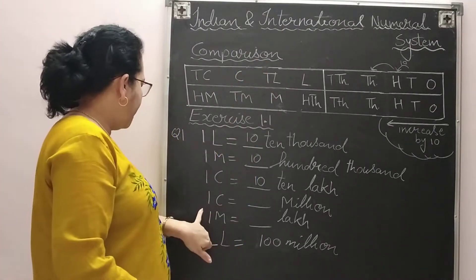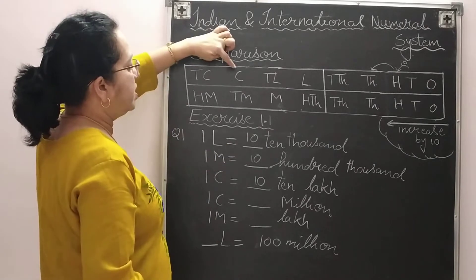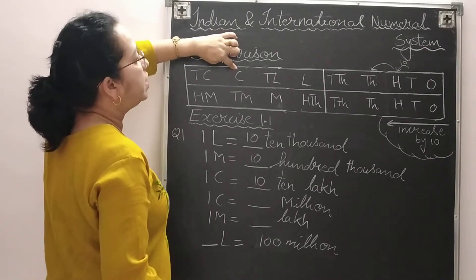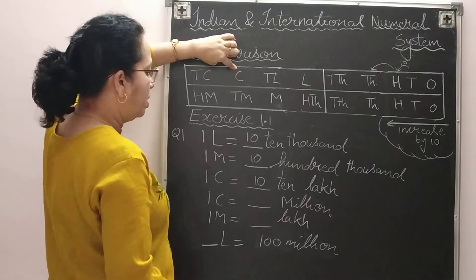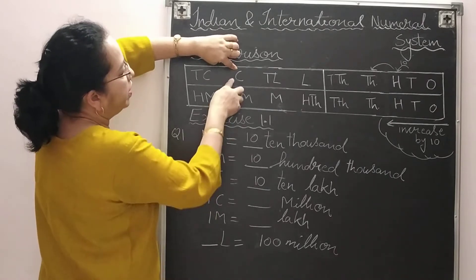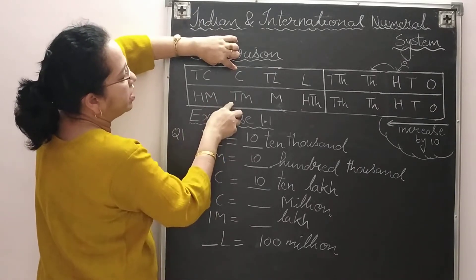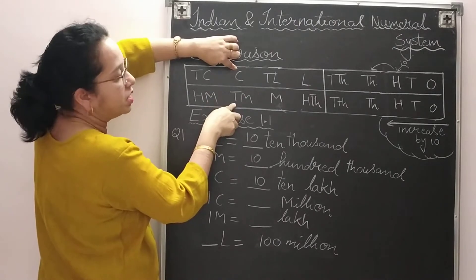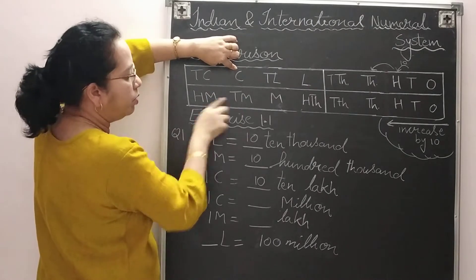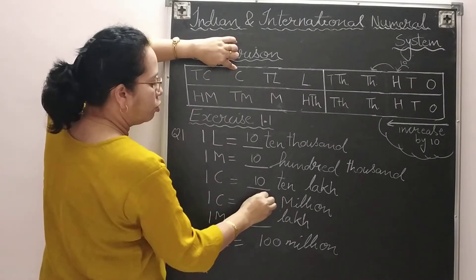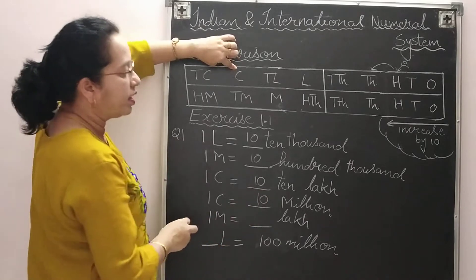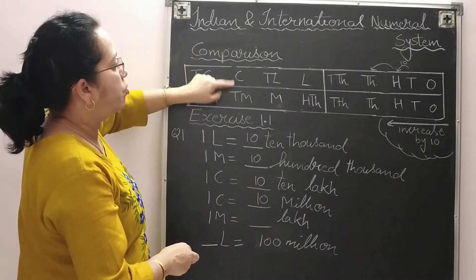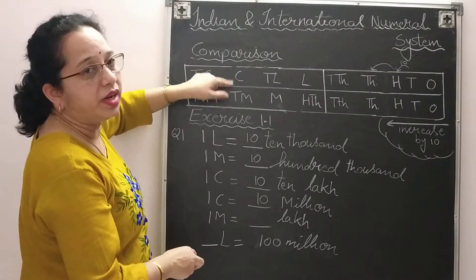Next one: one crore in terms of millions. Keep finger on one crore. They are asking about millions, and below one crore there are ten millions. Million is already written, so we write the number 10. Sometimes direct relations are given, so we can do the comparison directly. One million equals how many lakhs? You can see it's ten lakhs, so write down just 10.